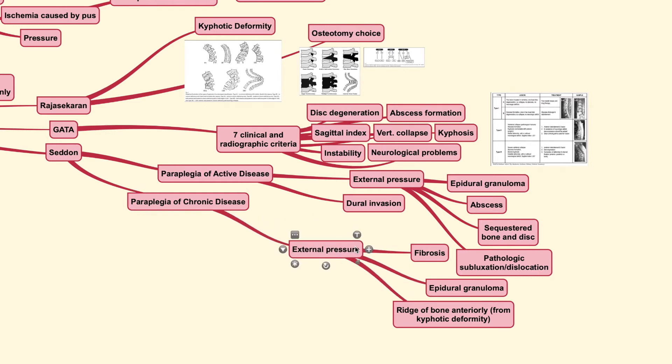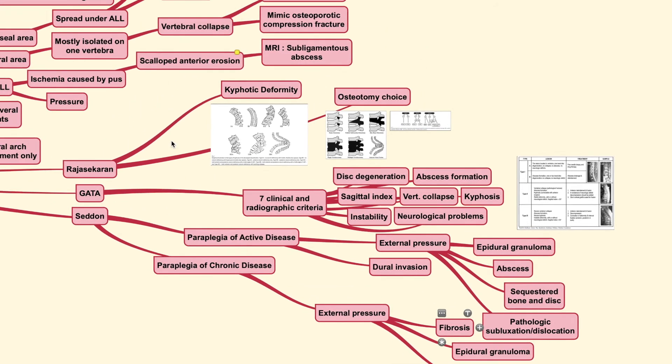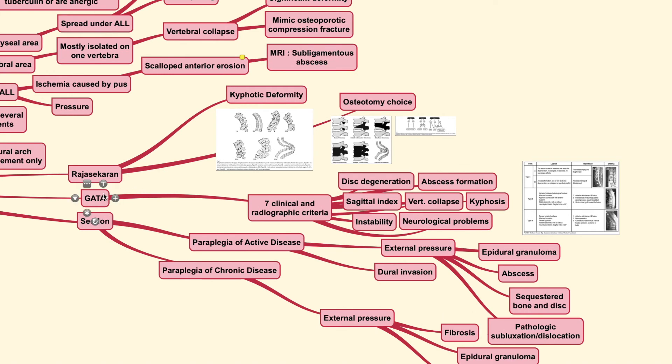While for the paraplegia of the chronic disease, it is usually only caused by external pressure. The pressure itself is caused by fibrous healed tissues and also by the epidural granuloma or the kyphotic deformity that forms by the ridge of bone anteriorly.